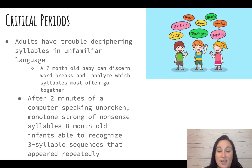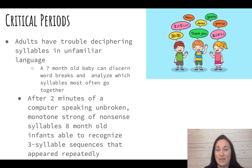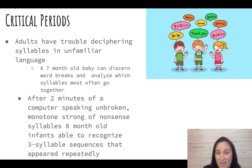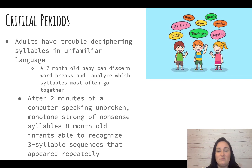Adults have trouble deciphering syllables when listening to an unfamiliar language — it just sounds like a bunch of things thrown together; we can't break apart the sounds into distinctive syllables. But a seven-month-old baby can discern and break things down, and can even analyze which syllables tend to go together more frequently. After just two minutes of a computer speaking an unbroken monotone string of nonsense syllables, an eight-month-old baby can recognize repeated three-syllable sequences. Their brain is wired to do this — but this ability fades over time.